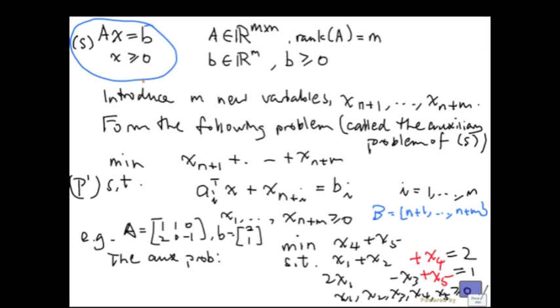To summarize, if s has a solution, then p' will have an optimal solution with optimal value 0. So, if you solve p' and the optimal value is not 0, that means s has no solution. Now, suppose that you solve p' and the optimal value is 0, and you use the simplex method to solve it. What you have at the end is a basic feasible solution for p' where xn plus 1 up to xn plus m are all 0. And if you throw away those variables, what you are left with are values for x1 up to xn that will also give you a basic feasible solution to the system s. And that's the idea.